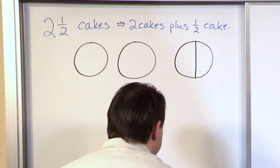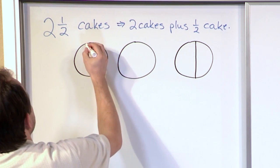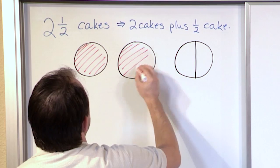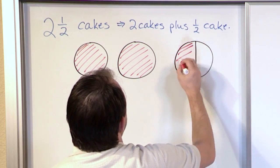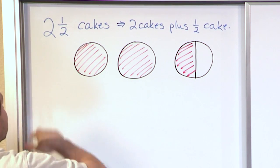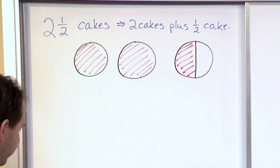Now if I wanted to represent two and a half cakes, then what I have is this is the first cake, this is the second cake, and here's the half a cake. So this two and a half, that's what it means. When you see something like this where the numbers are written like that, that's two and a half.